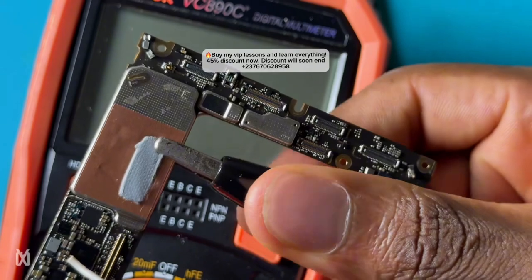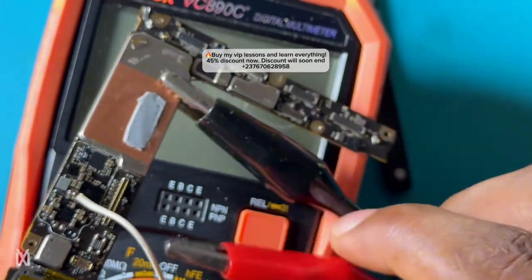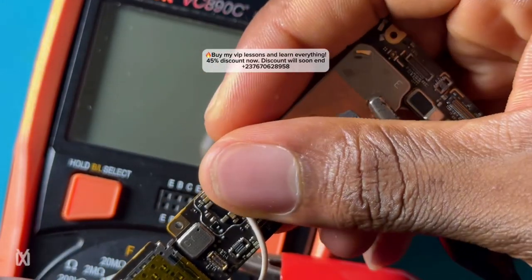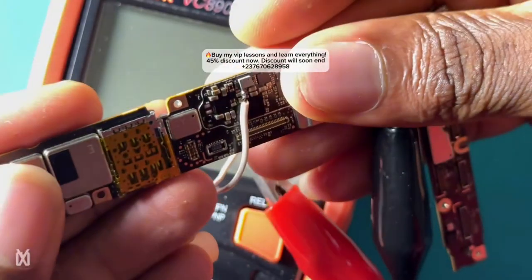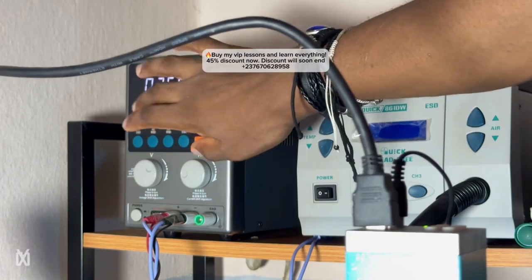I connected my ground probe of my DC power supply, then I connected the red probe. I don't have a thermal camera, so I have to feel the heat first. This is the first method—I have to feel the heat, then know where it's coming from.